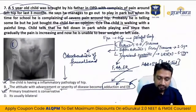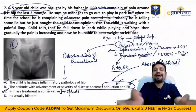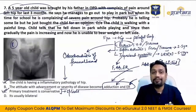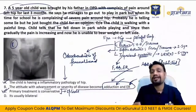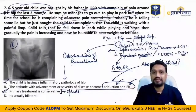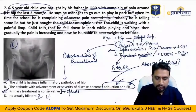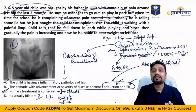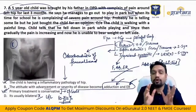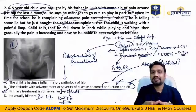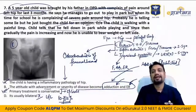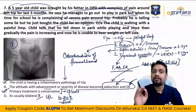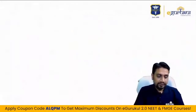Primary treatment for Perthes is conservative — majority treated with Petrie brace or Scottish Rite brace with both hips in abduction. If the patient presents in the collapsed stage with a destroyed head, different osteotomies are needed. Perthes is usually unilateral — only 10 to 15% cases are bilateral, seen in systemic conditions like collagenopathies, coagulopathies, sickle cell anemia, or protein deficiencies.